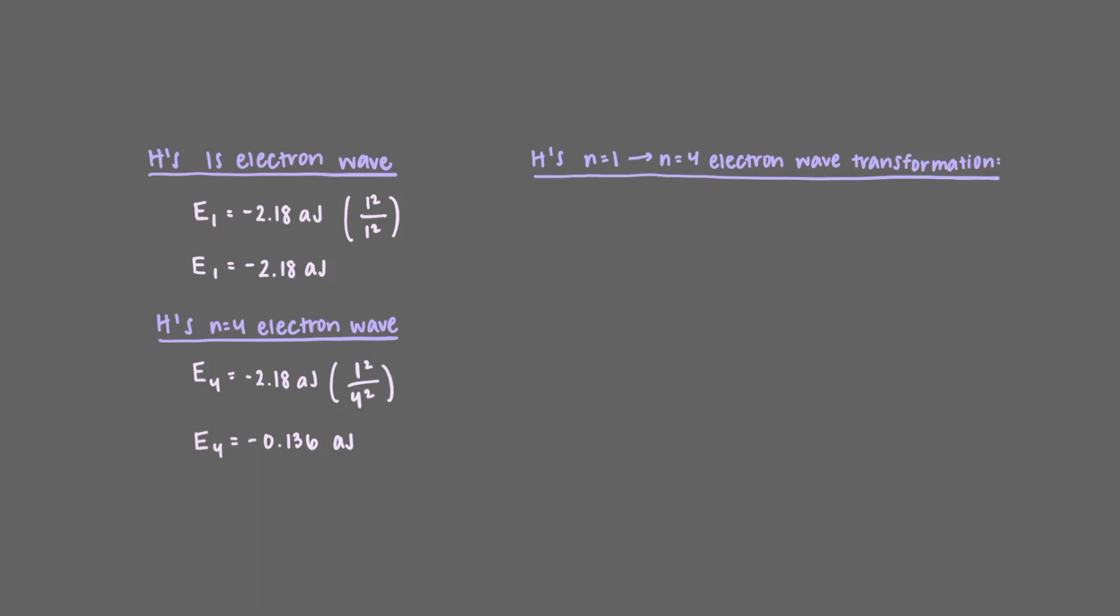That means to cause the n equals 1 electron to transform to n equals 4, we would have to use light with photon energy of exactly 2.044 attojoules.